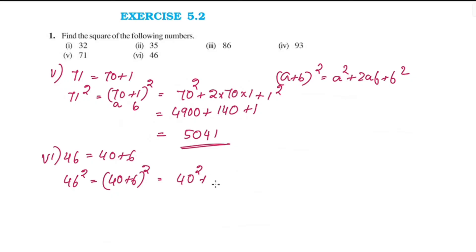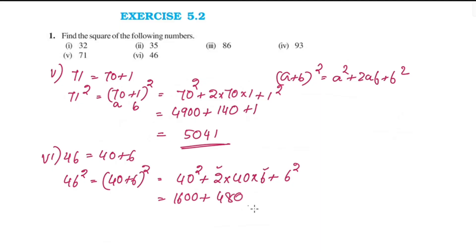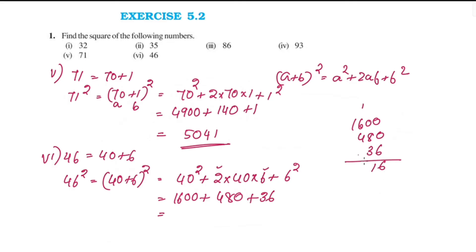Continuing question 5: using a² + 2ab + b², with a = 40 and b = 6. So 40 squared is 1600, plus 2 × 40 × 6 = 480, plus 6 squared = 36. That gives 1600 plus 480 plus 36 equals 2116.